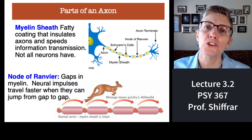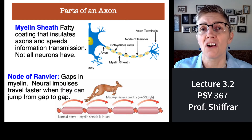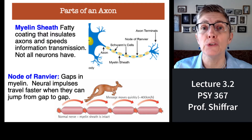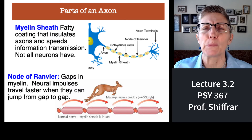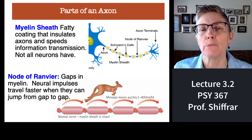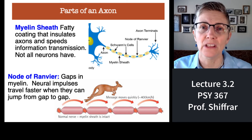I want to spend a moment talking about myelin. We have some very long axons, and obviously it's going to be very important for information to be communicated as quickly as possible down those axons. For example, if I step on a tack, I want my brain to figure out that I need to move my foot as quickly as possible. So how does the brain speed the transmission of action potentials? It does so with a kind of insulation called myelin.